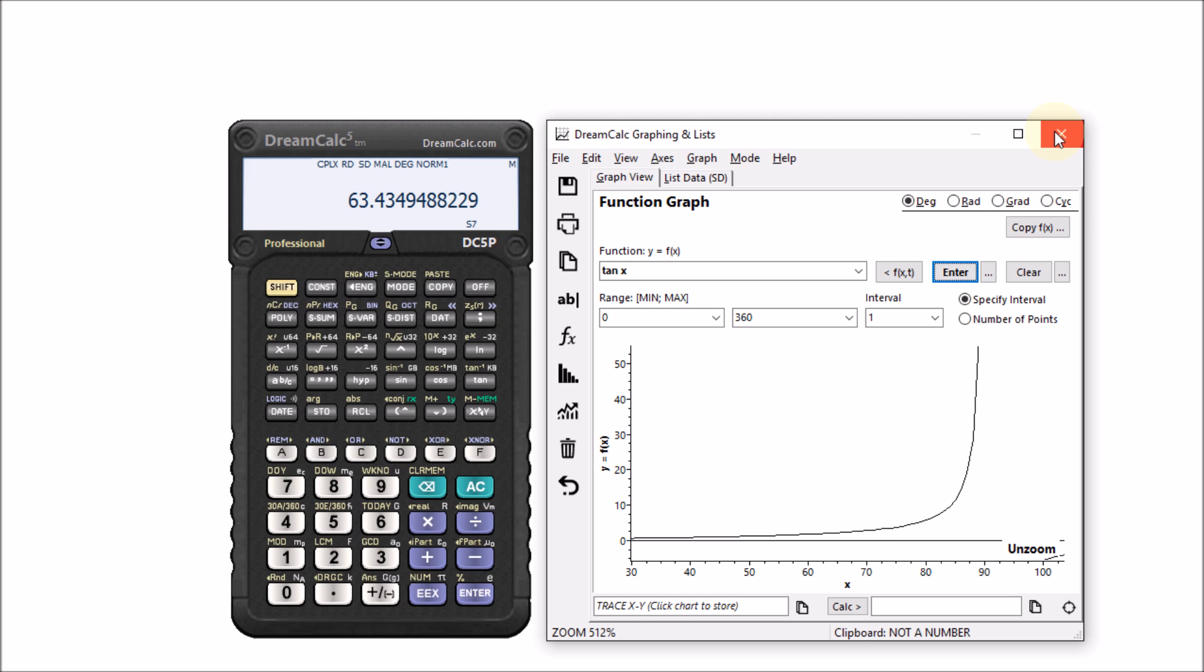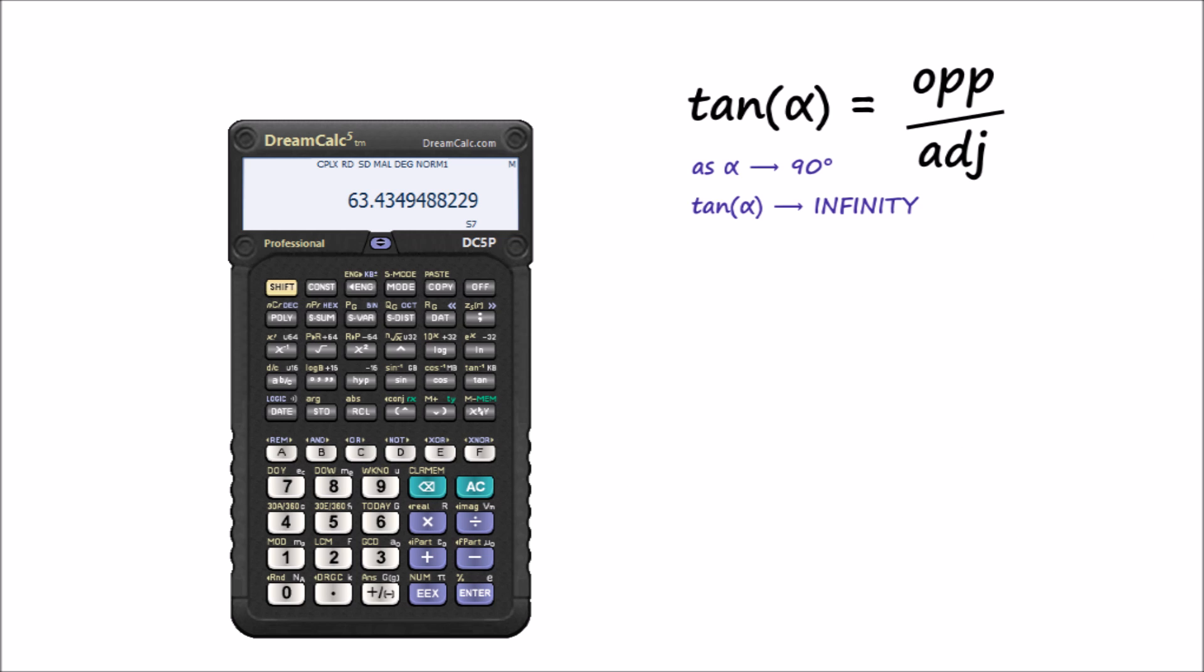This makes sense when we consider that as we draw a series of triangles with an increasingly large angle, the opposite side becomes ever longer. Ultimately, however, no matter how big a triangle we draw, the angle will always be less than 90 degrees.